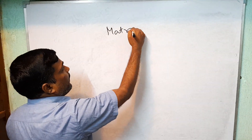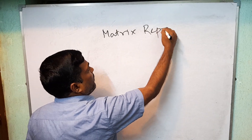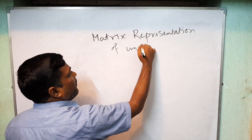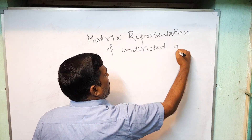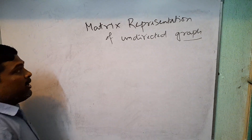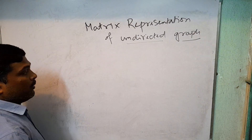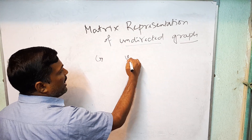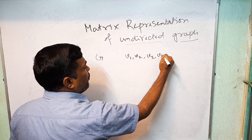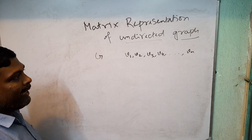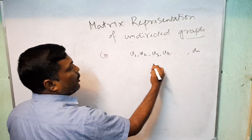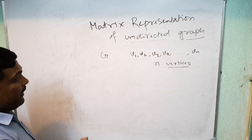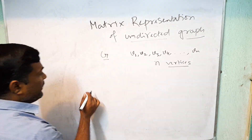Matrix metric representation of undirected graph. Suppose G is one graph with vertices V1, V2, V3, V4, V5, ..., Vn. This graph has n vertices. Then the adjacency matrix of G: